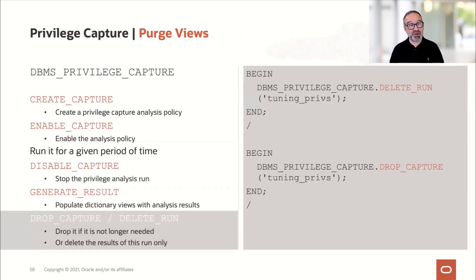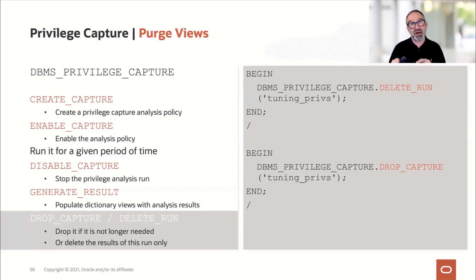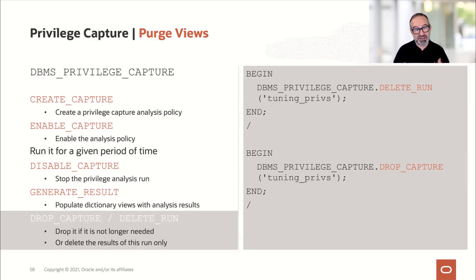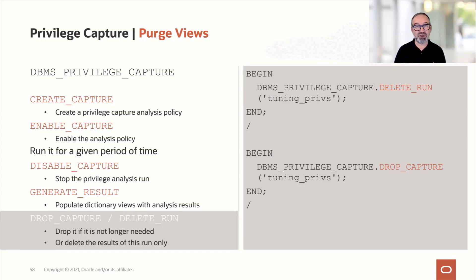Be careful. If I want to start another run, I delete this one so I can start the same run again, or I drop the capture. Whatever you do, it wipes out the information from the views. The views only get populated when you start a capture and enable it. Once you disable it, you find the information and can generate the reports. Once you drop or delete the run, the views will be wiped and you're ready for the next run.